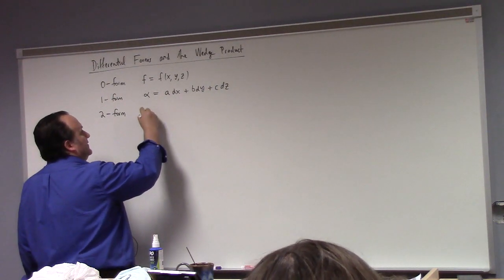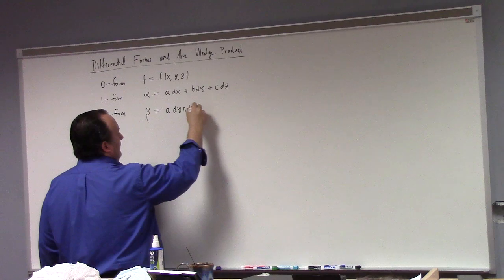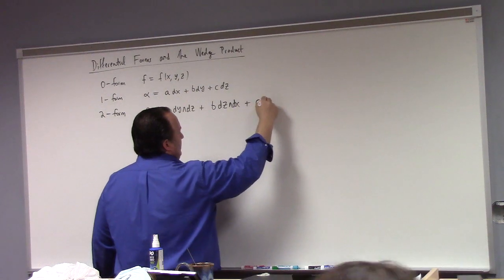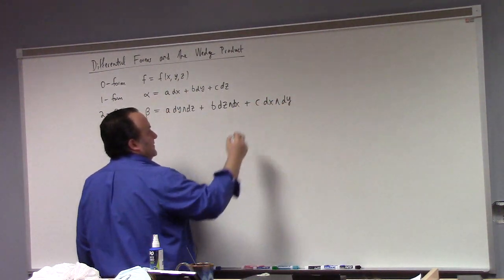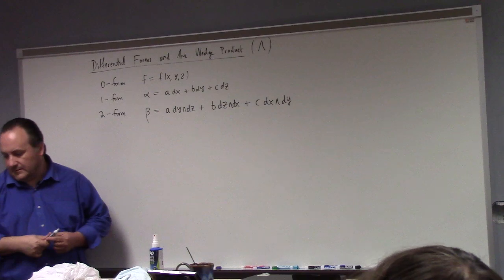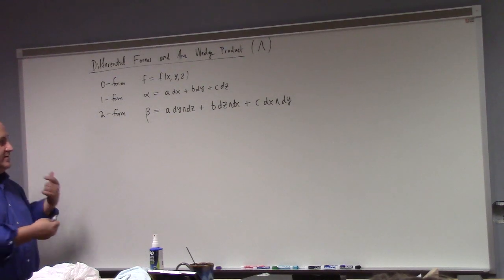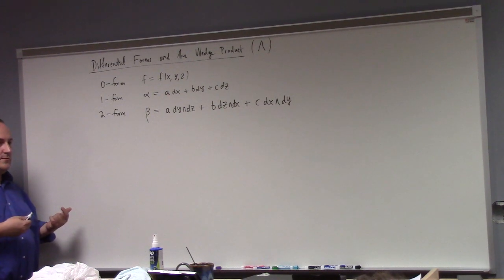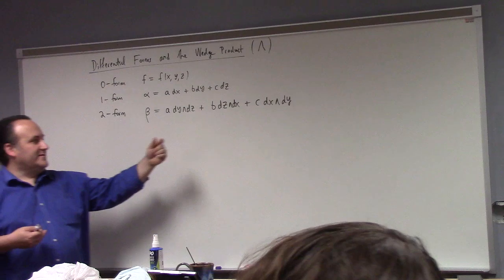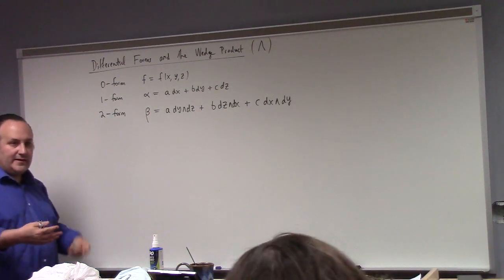A two form is a little bit new. Beta would be something like A dy wedge dz plus B dz wedge dx plus C dx wedge dy. This is the wedge product — a construction you can make with differentials to construct new things. You can think about these wedge products, in some sense, as being identified with area: a little YZ area, a little ZX area, a little oriented XY area. They're encoding areas.